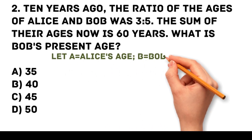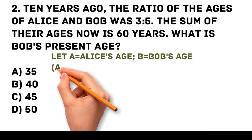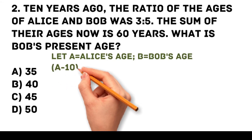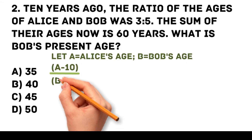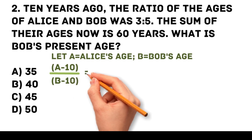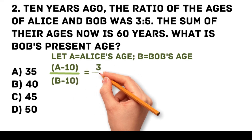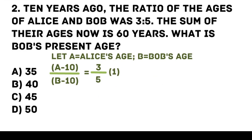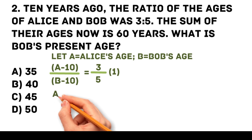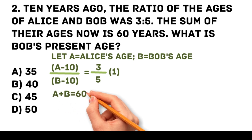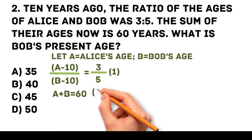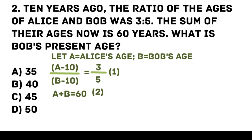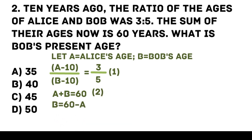Let a be Alice's age and b be Bob's age. Given that 10 years ago the ratio of their ages was 3 to 5, therefore (a minus 10) over (b minus 10) equals 3/5. The sum of their ages now is a plus b equals 60, so from that equation b equals 60 minus a.